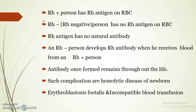Based on the presence of Rh antigen, the blood groups A, B, O, and AB are each subdivided further: A positive and A negative, B positive and B negative, AB positive and AB negative, and O positive and O negative.